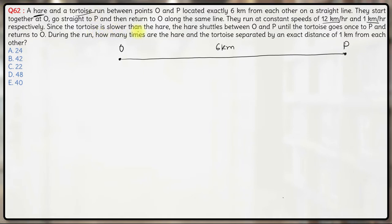Since the tortoise is slower than the hare, the hare shuttles between O and P until the tortoise goes once to P and returns to O. So the tortoise completes this to-and-fro journey only once, whereas the hare will complete it many more times. The question is: during the run, how many times are the hare and the tortoise separated by an exact distance of 1 kilometer?